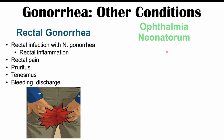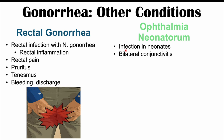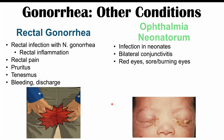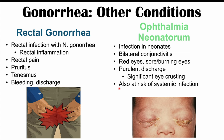Ophthalmia neonatorum occurs in neonates born to mothers infected with gonorrhea. It leads to bilateral conjunctivitis with red, sore, burning eyes, purulent eye discharge, and significant eye crusting as seen in accompanying images. These patients are also at risk for systemic infection. Other conditions include pharyngeal gonorrhea — infection in the throat — and disseminated gonorrheal infection, which is rare and can cause fever, migratory polyarthritis, and other systemic signs and symptoms.